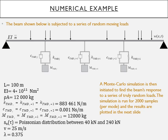For the Poissonian distribution the magnitudes of the loading vary between 40 kilonewtons and 240 kilonewtons. The velocity is a constant for each of the loading, 25 meters per second, and λ which is the amount of loads that we expect to arrive per second is 0.375.